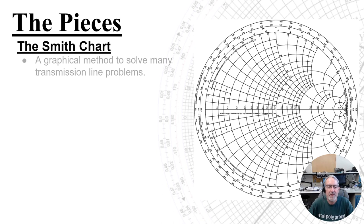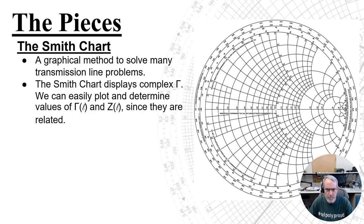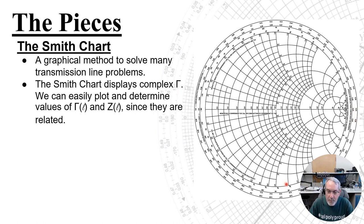This is not intended to be a complete explanation of the Smith chart — that's a lecture all by itself. I just want to point out some important concepts behind the Smith chart as they are used in this process. It's a graphical method for solving many transmission line problems, and it displays complex gamma. We can easily plot and determine values of gamma and impedance as a function of length. Remembering that length here is the circumference around the chart — this is wavelength — it's a half wavelength in the trip all the way around the Smith chart.